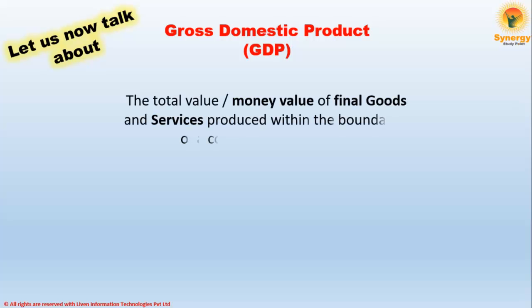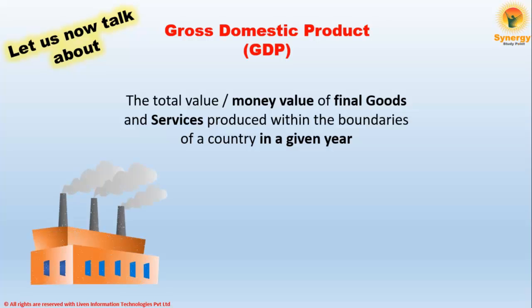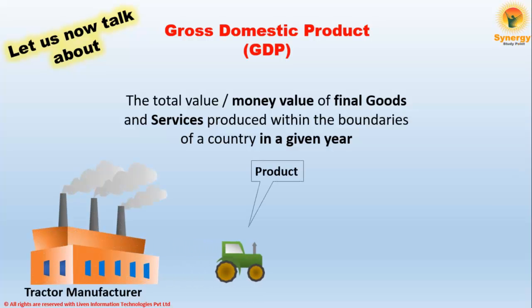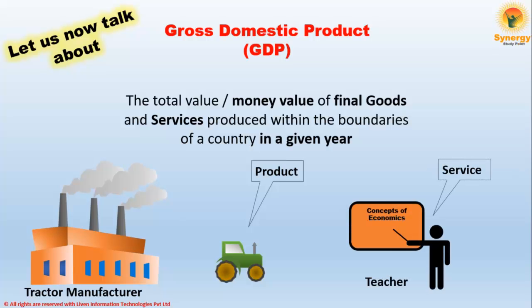Let us first talk about GDP. It's the total money value of final goods and services produced within the boundaries of a country in a given year — that is, one year. For example, for a tractor manufacturer, a tractor would be his offered product, and for a teacher, teaching would be his offered service. In calculating GDP, we add the value of such products and services.